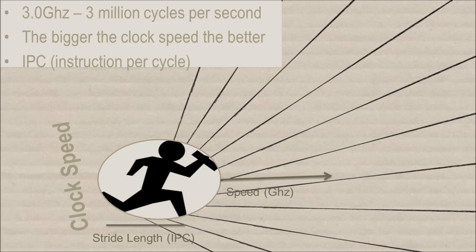However, the efficiency of each cycle is also important. The efficiency of each cycle is known as IPC, instruction per cycle.